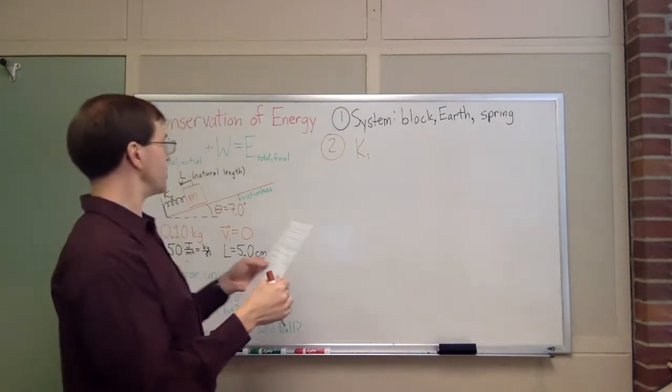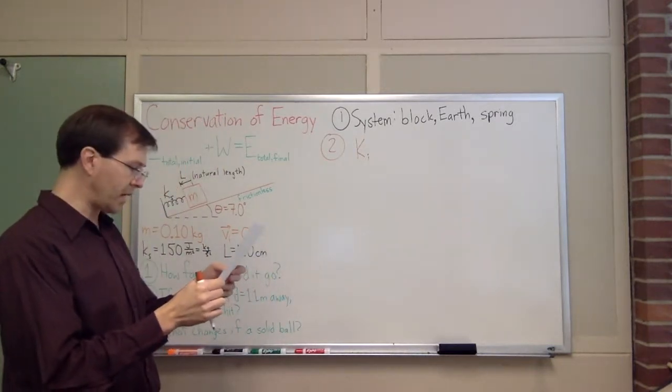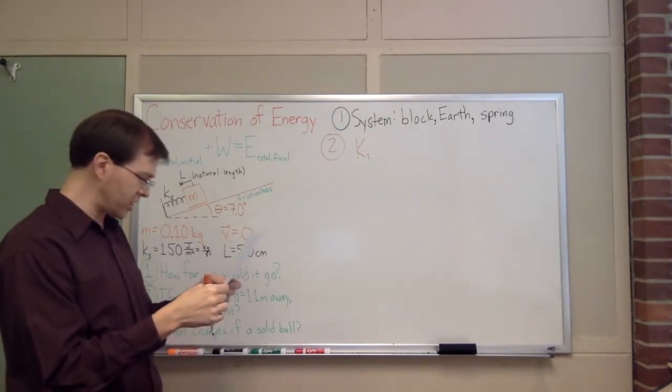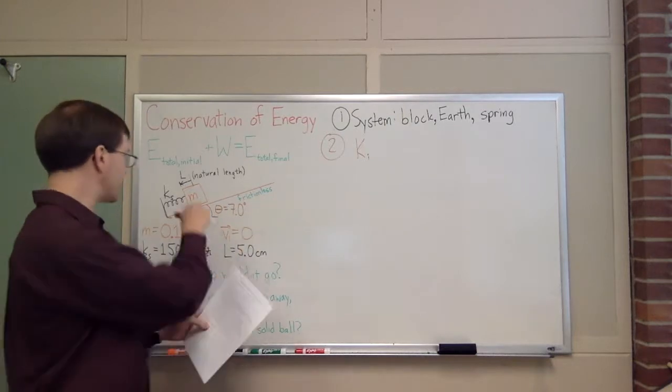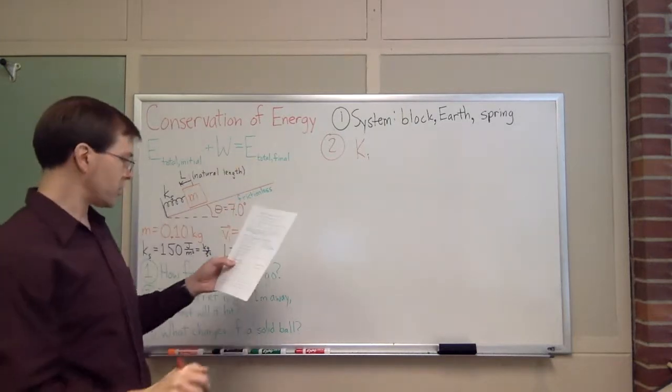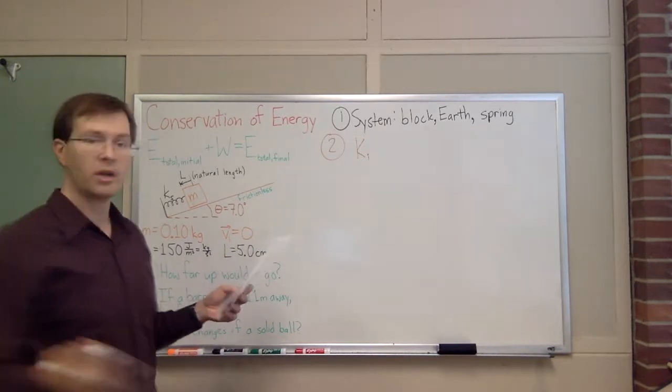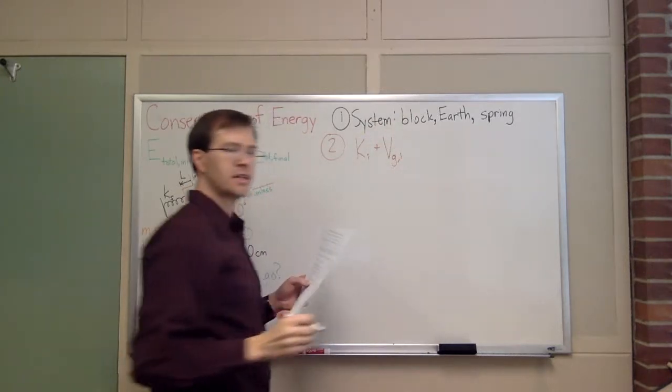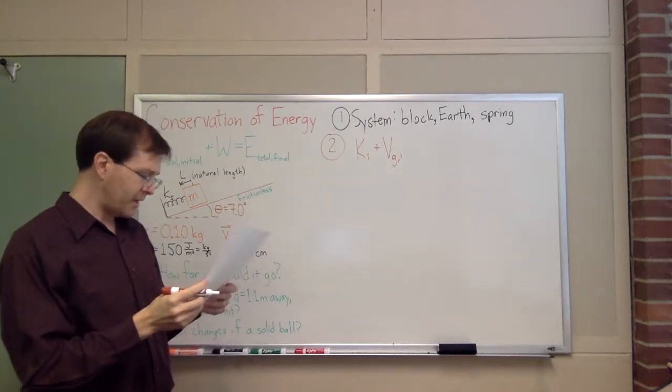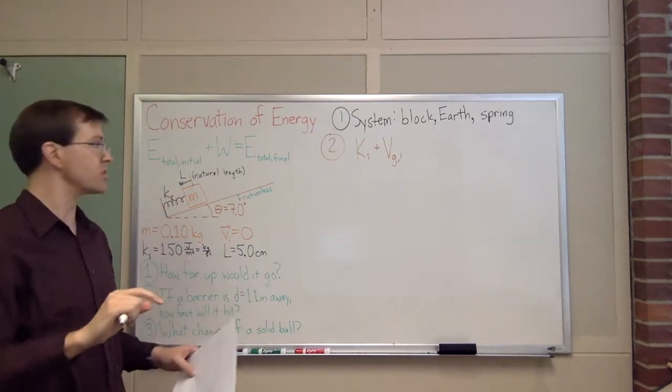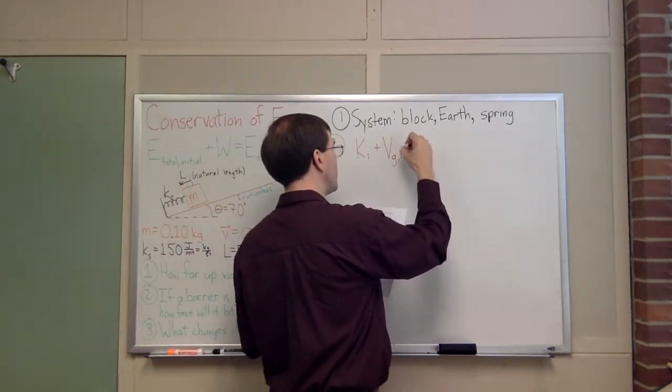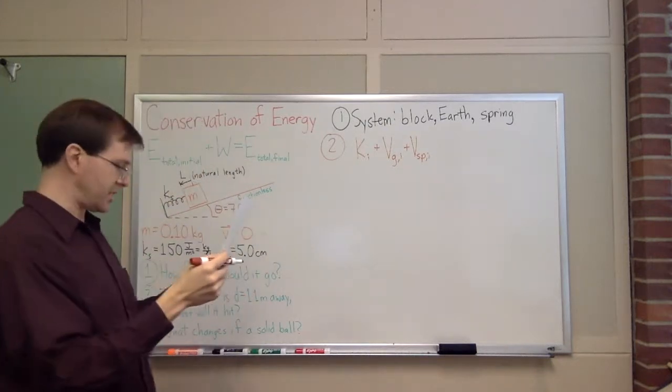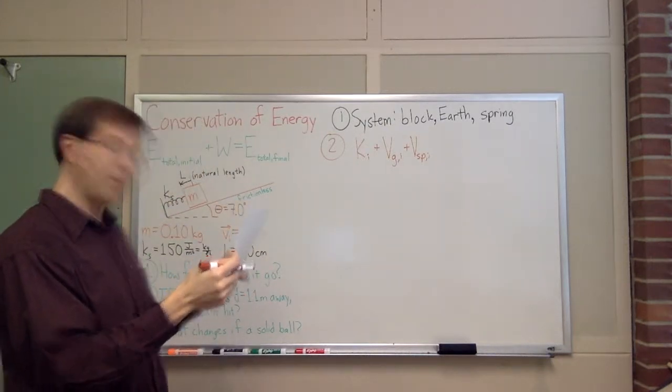Any object whose rotation changes, there's nothing rotating in this story. Any object that has a temperature change, no temperature changes are important here. It's a frictionless surface, so there's no temperature change going on. No phase changes, nothing burning fuel. An object whose height changes, this mass is going from one height to another. So, certainly I need to include a gravitational potential energy term. My notation for potential energy is going to be capital V. Any spring whose length changes, we've got a spring whose length changes in the story. So, I want to have a V spring.